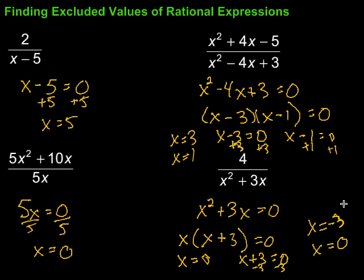In summary, to find the excluded values in rational expressions, what we want to do is set the denominator equal to zero and then solve. Those values that we find there, sometimes it could be just one value, but other times we could have more than one. Those things we need to set aside, we can't use those because our denominator would be zero and we can't divide by zero.